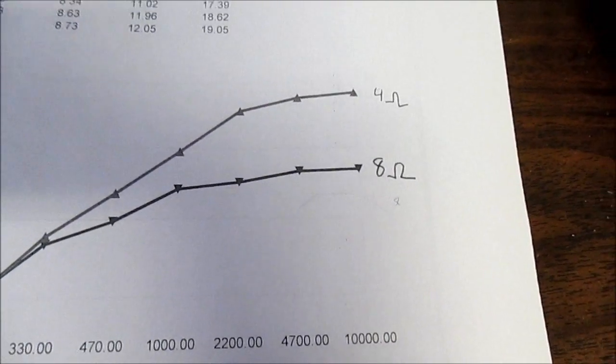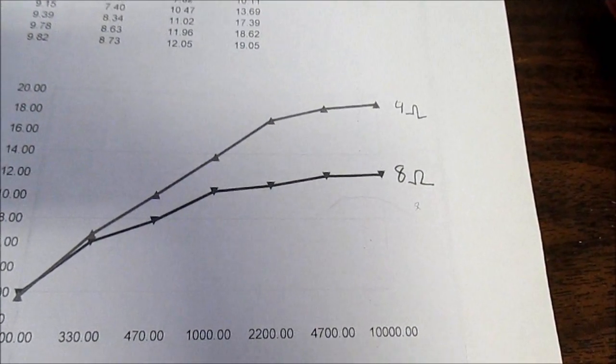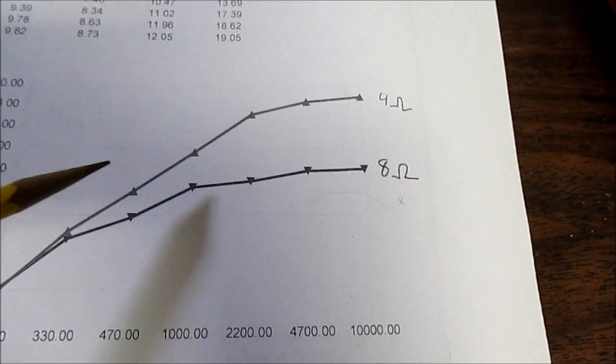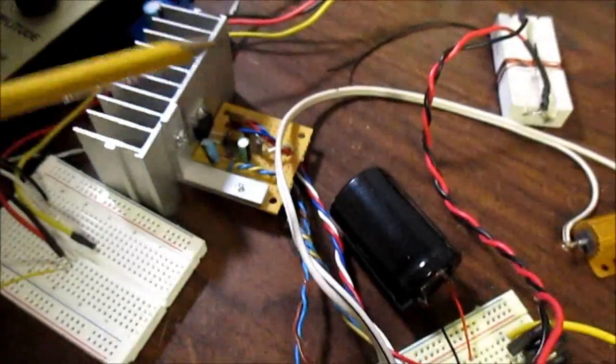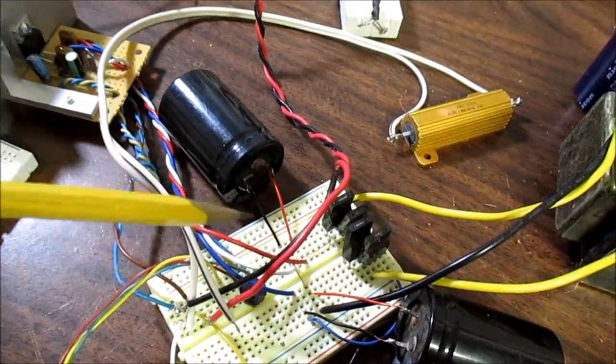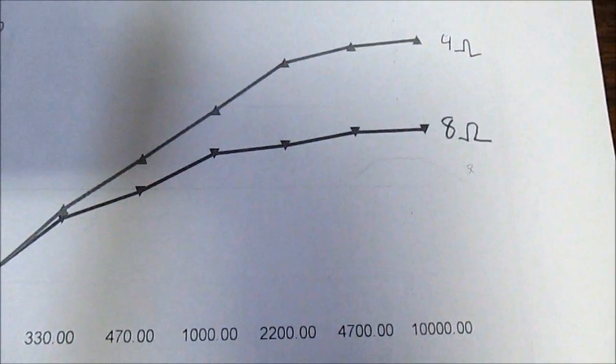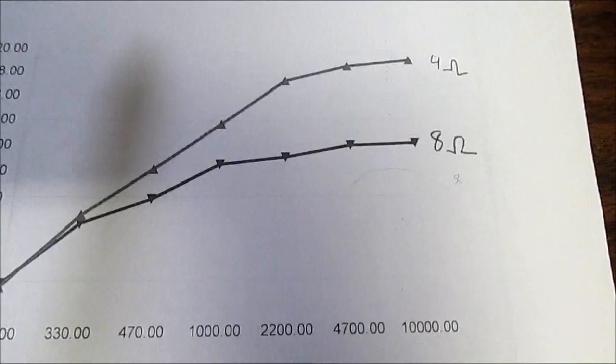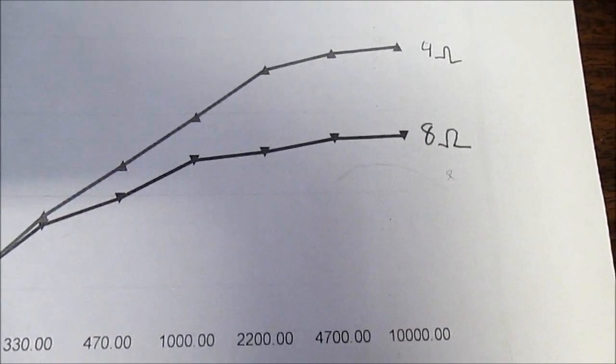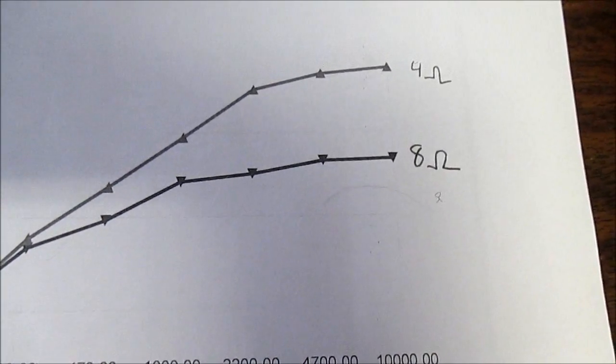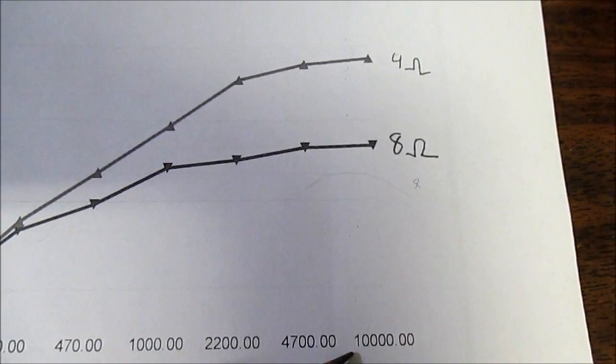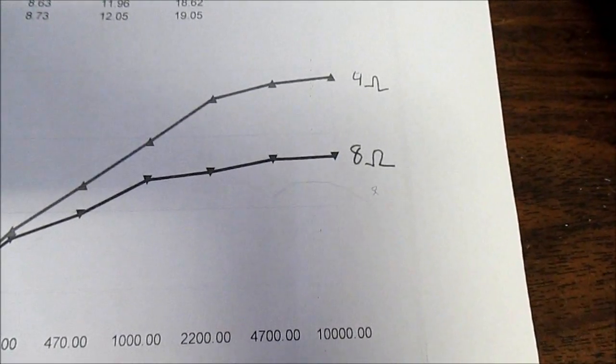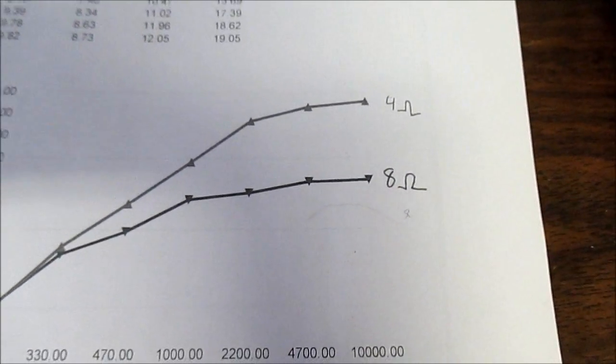But you do have to remember, this is just a single channel amplifier. If it was stereo, it would make a difference because you have a second amplifier pulling current from the filter caps. So you'd have to consider that if you're building a stereo amp. And that's why I tend to go with at least 6800 microfarads. Or even with my computer amp over there, I went with 10,000 microfarad capacitors.